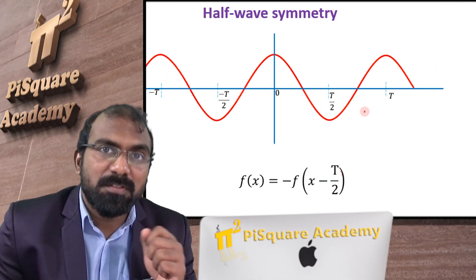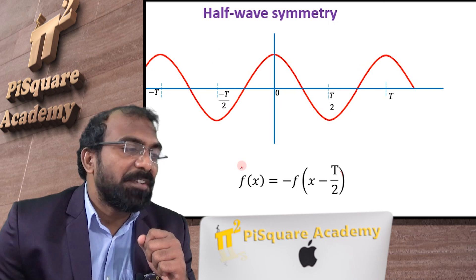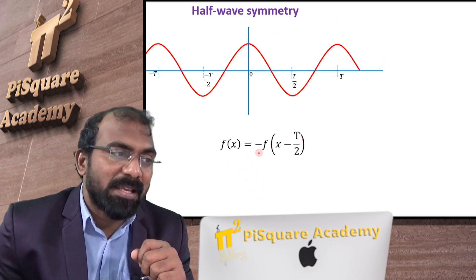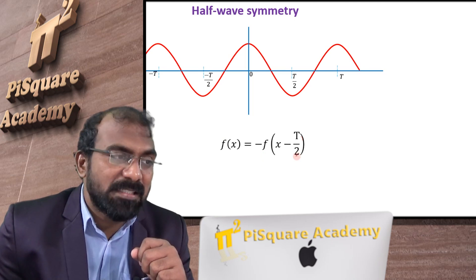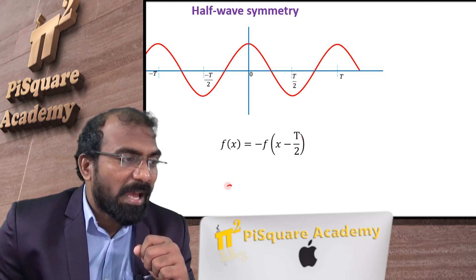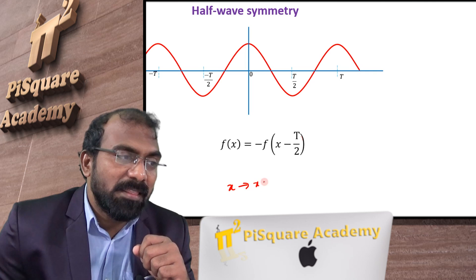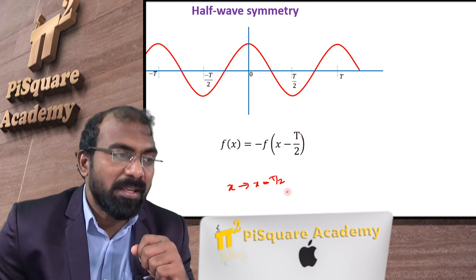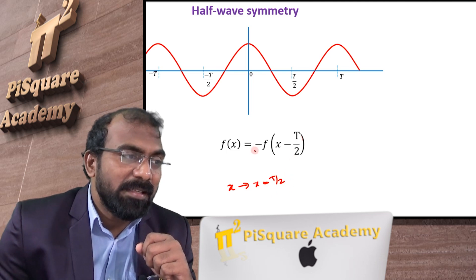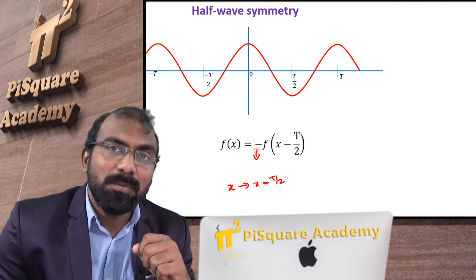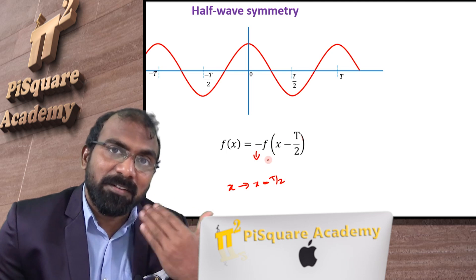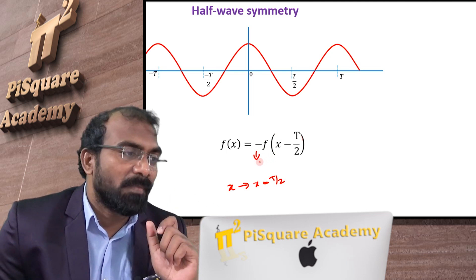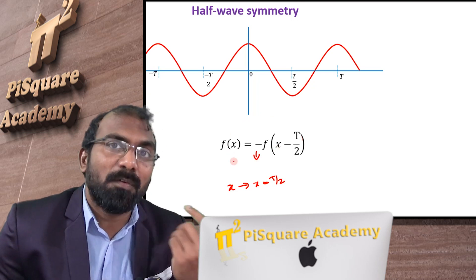Now let us go to half wave symmetry. The definition of half wave symmetry is f of x equals to minus times f of x minus T by 2. This means I am shifting the signal by a length of T by 2, which is a right shift. And then I am taking the negative of the signal — that is, we are flipping the signal. Then that will be equal to the original signal.